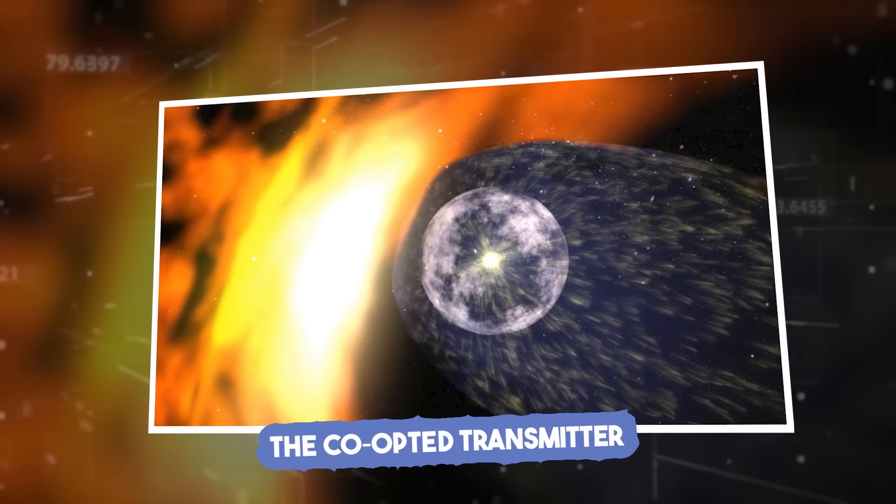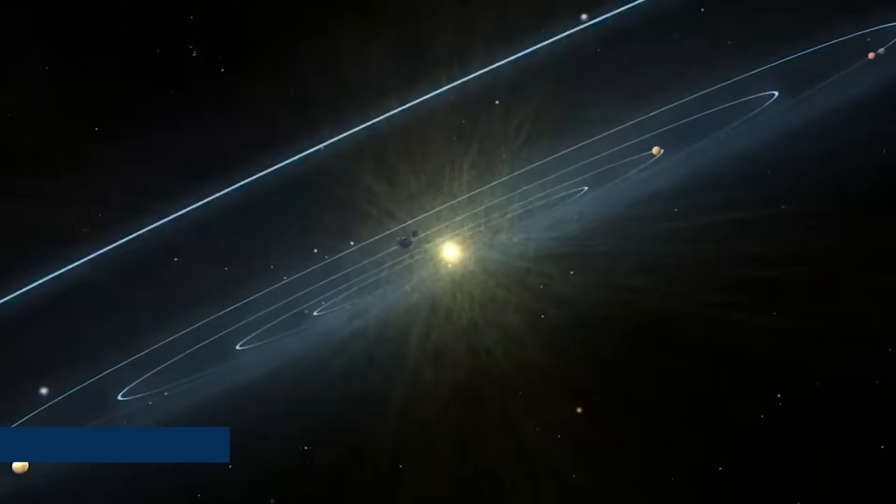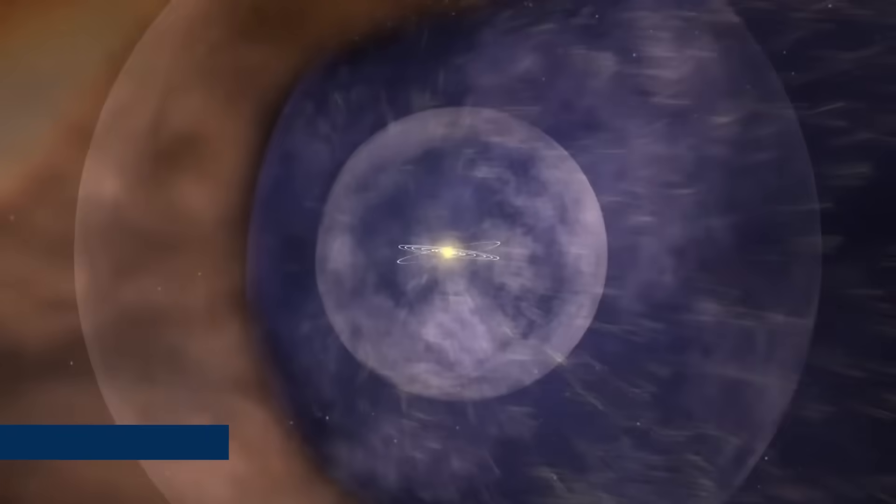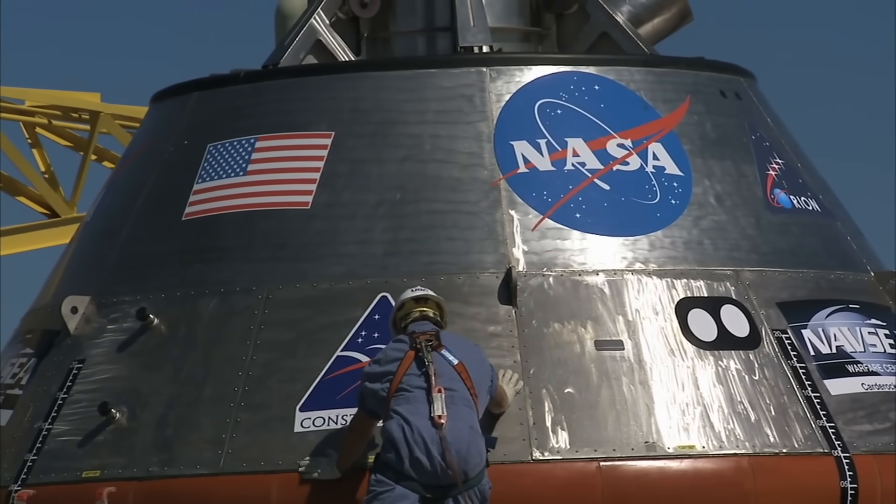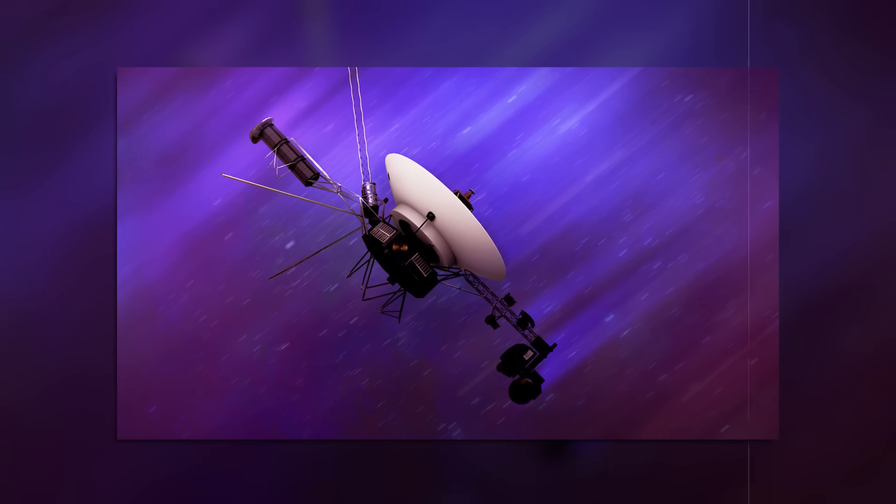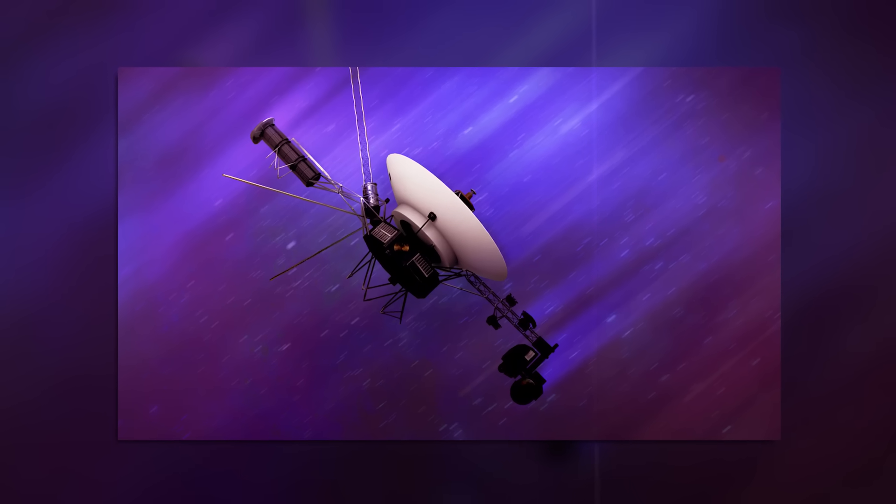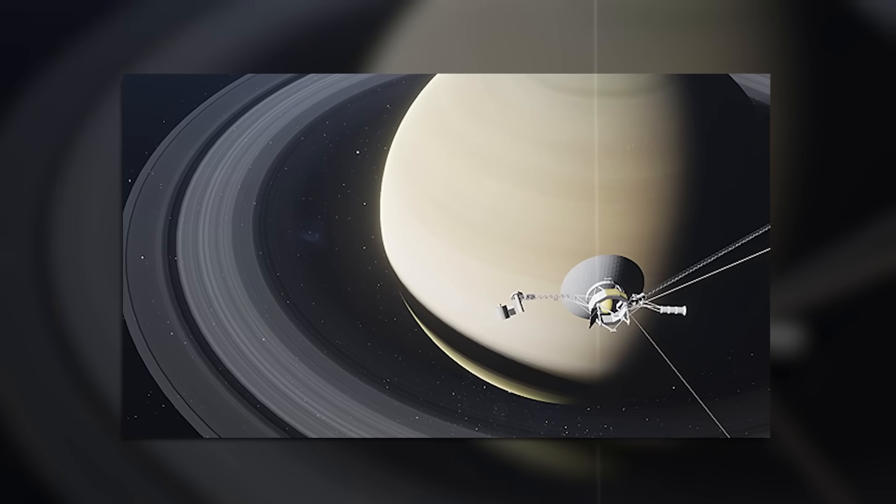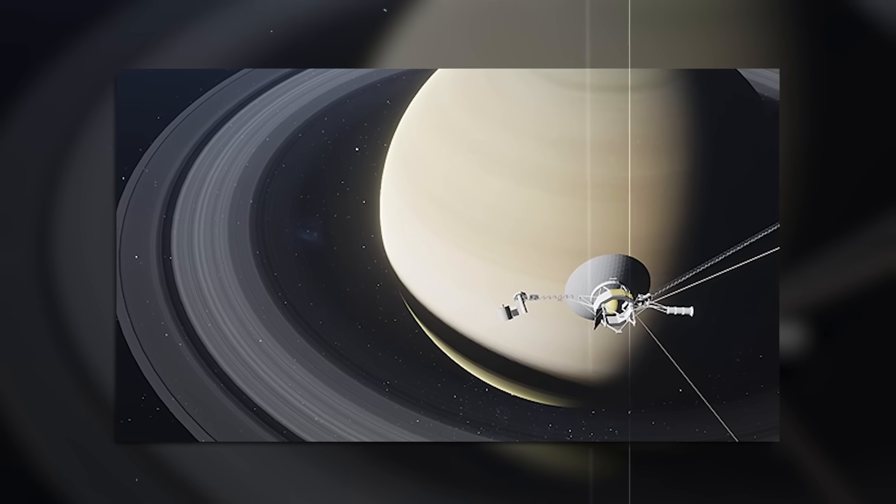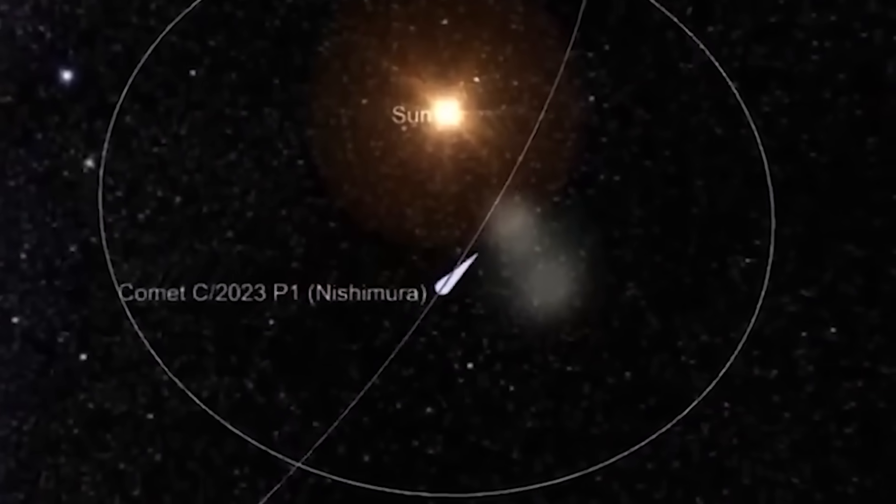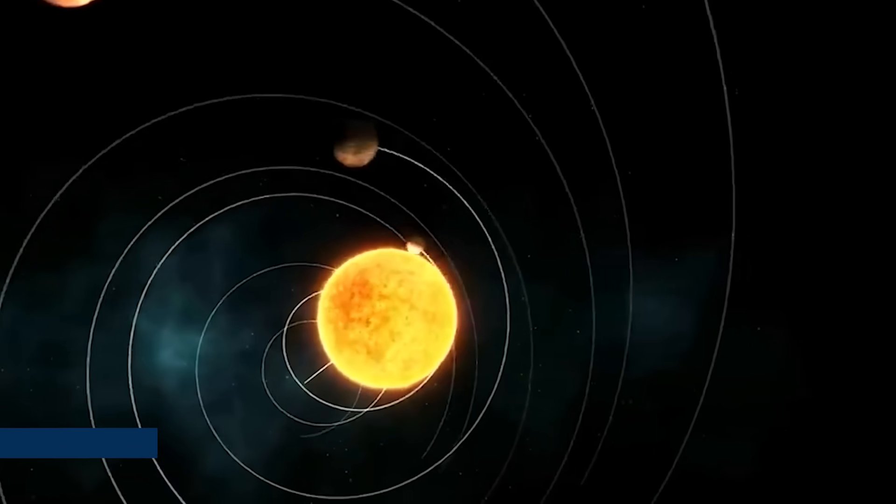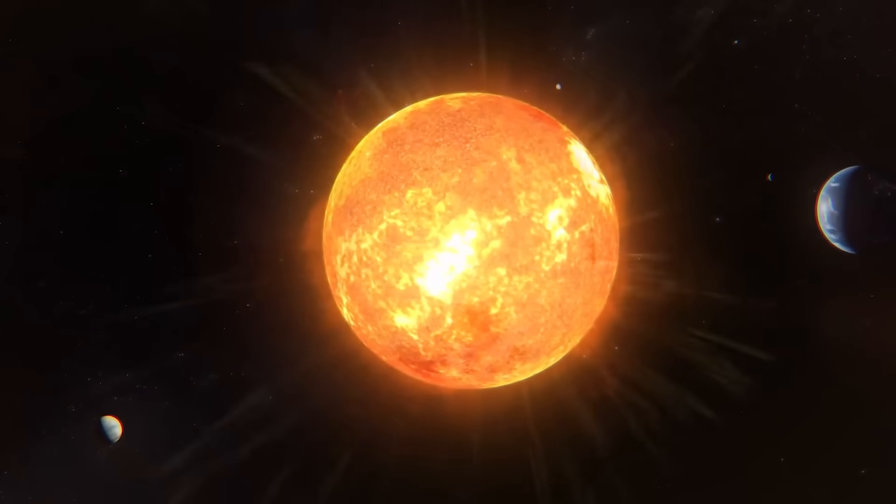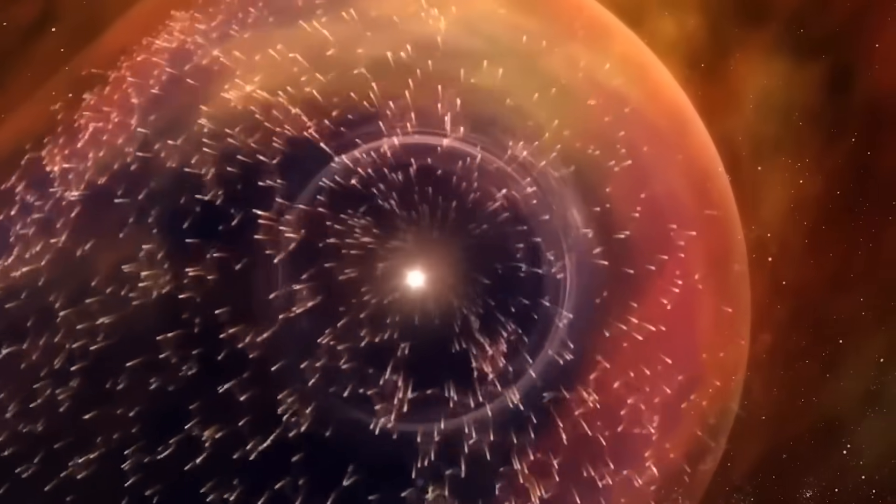By September 24th, 2025, NASA's signal processing lab in Maryland made a startling discovery. Hidden inside Voyager 2's returning stream were sequences that mapped directly onto 3I/ATLAS's orbital elements: inclination, perihelion distance, and velocity near 210,000 kilometers per hour. Yet Voyager had no instruments to observe any of that. The only logical conclusion? It wasn't transmitting its own data anymore.